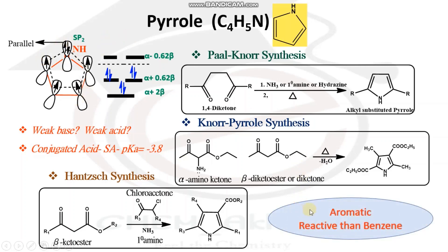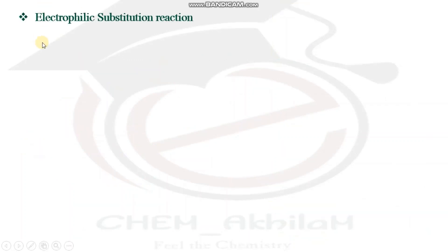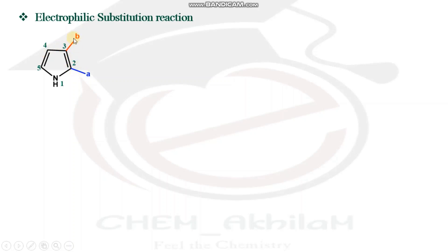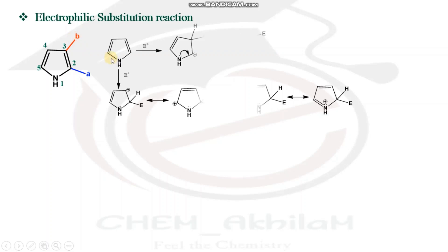Pyrrole is an aromatic compound and is more reactive than benzene. Now we can see the electrophilic substitution reaction of pyrrole. Positions two and five are equivalent, and positions three and four are equivalent. We need to determine whether substitution goes to position two or position three.